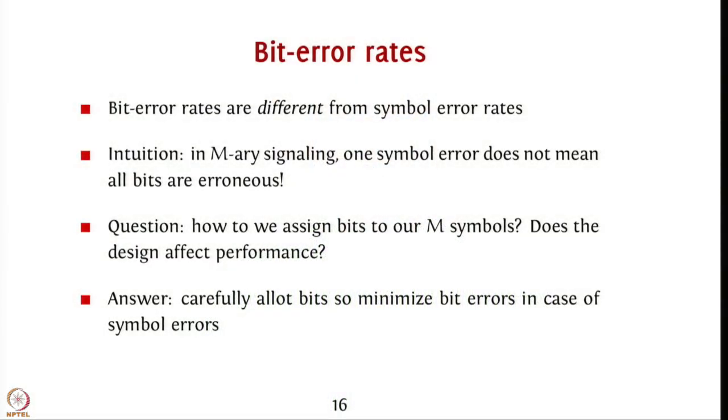One aspect we touched upon was that for complicated constellations you may need to use something like a union bound for an approximation. But one thing left unanswered was that this is about symbol error rates, while this course is about transmission of bits. What is the difference between symbol error rates and bit error rates, and how are bit error rates computed for a given constellation? That is the topic for today.